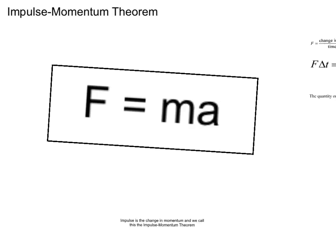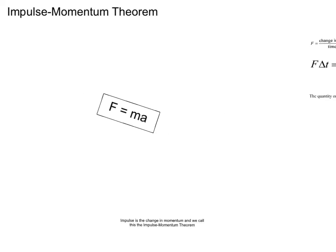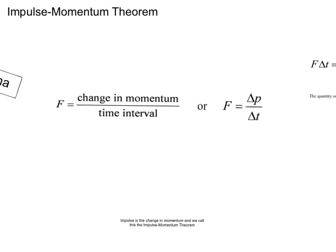Today, we use F equals MA as a quick way to define Newton's second law. But, Newton himself did not express it in that way. Instead, he said that a force was the rate of change of momentum over time. So, instead of F equals MA, he said that the force is equal to the change in momentum divided by the time interval over which the force acts.